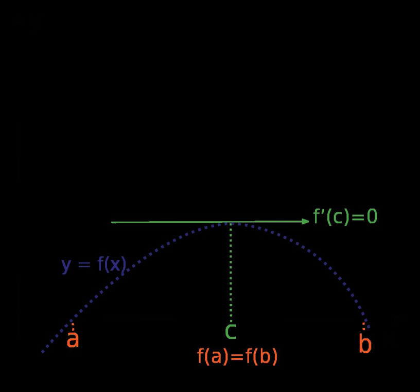If differentiability fails at an interior point of the interval, the conclusion of Rolle's theorem may not hold. Consider the absolute value function f(x) = |x| on the interval [−1, 1].